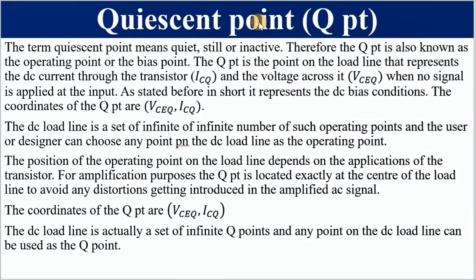This is a revision of the Q-point from the previous lecture on transistor biasing techniques. The term quiescent point means quiet, still, inactive, or at rest. The quiescent point is also known as the operating point or biasing point of a BJT transistor. It is a point on the load line representing the DC current through the transistor — specifically the quiescent collector current and the quiescent collector-to-emitter voltage — when no signal is applied at the input. In short, the Q-point represents DC bias conditions and has two coordinates: quiescent collector current and quiescent collector-to-emitter voltage.